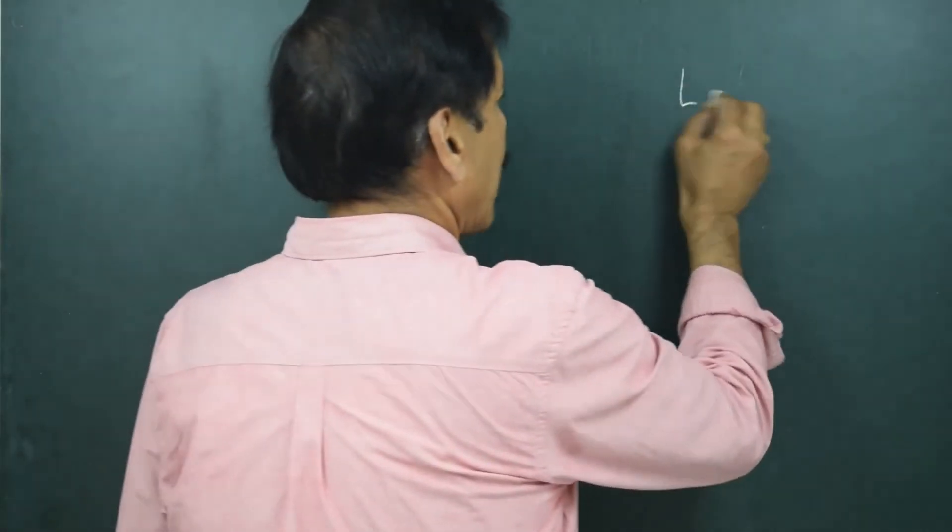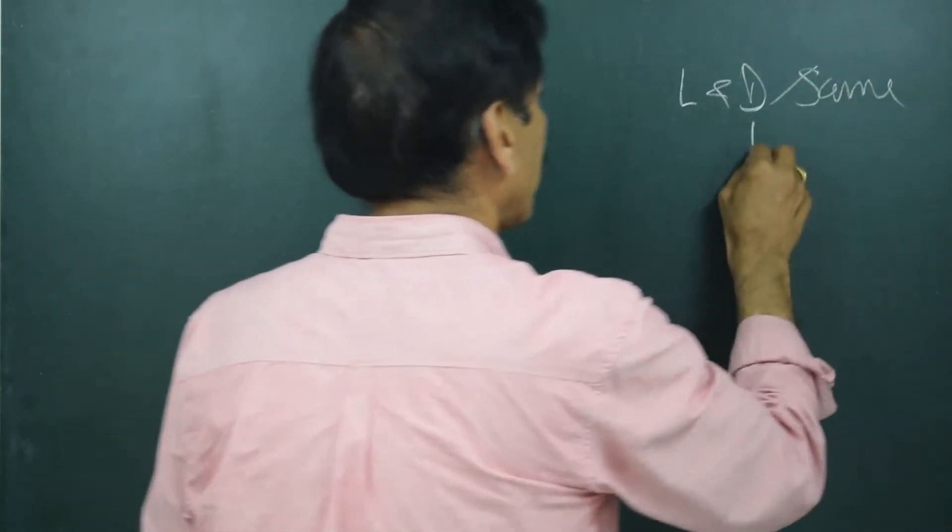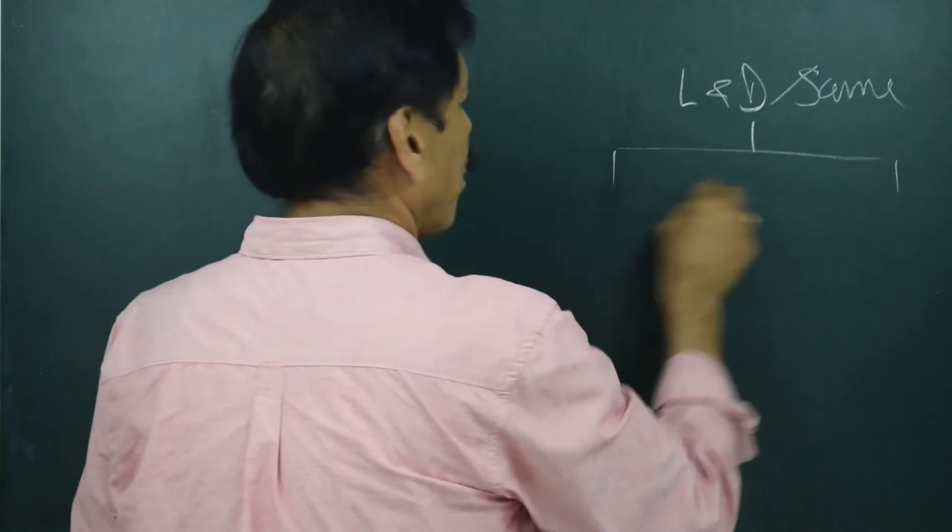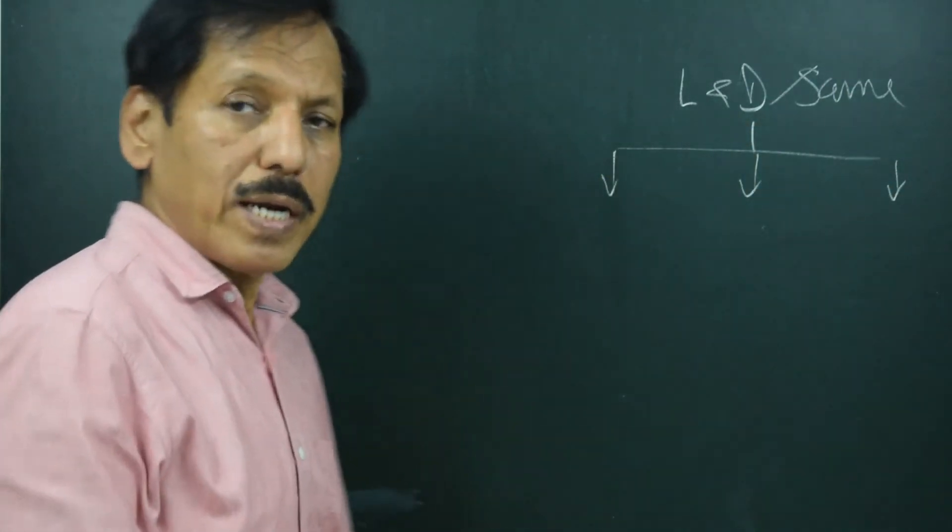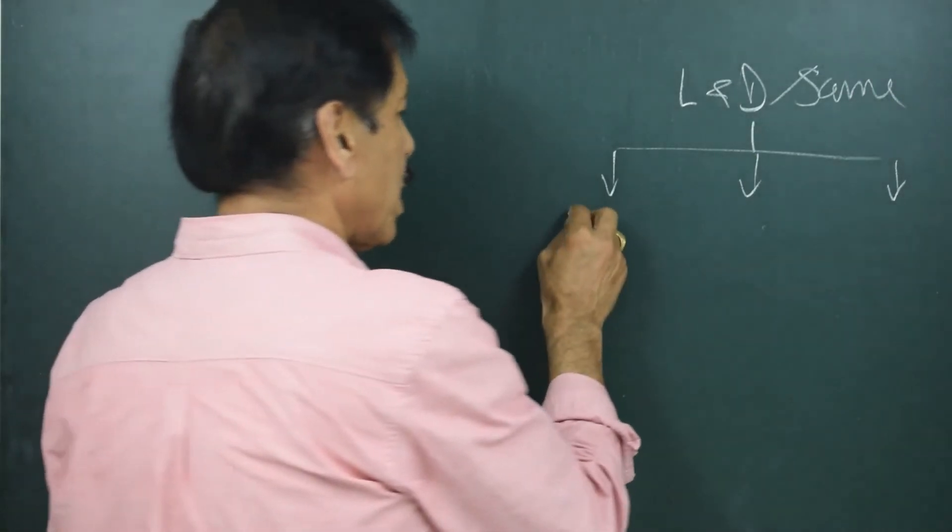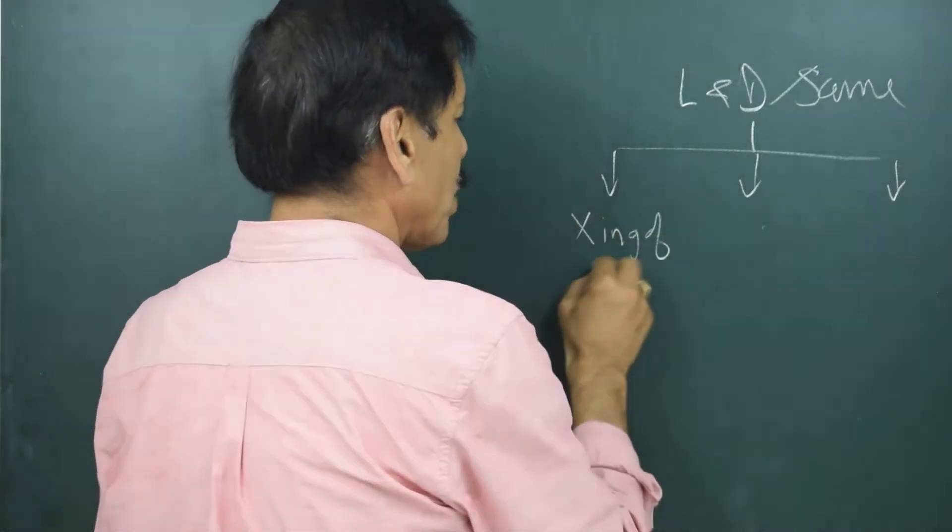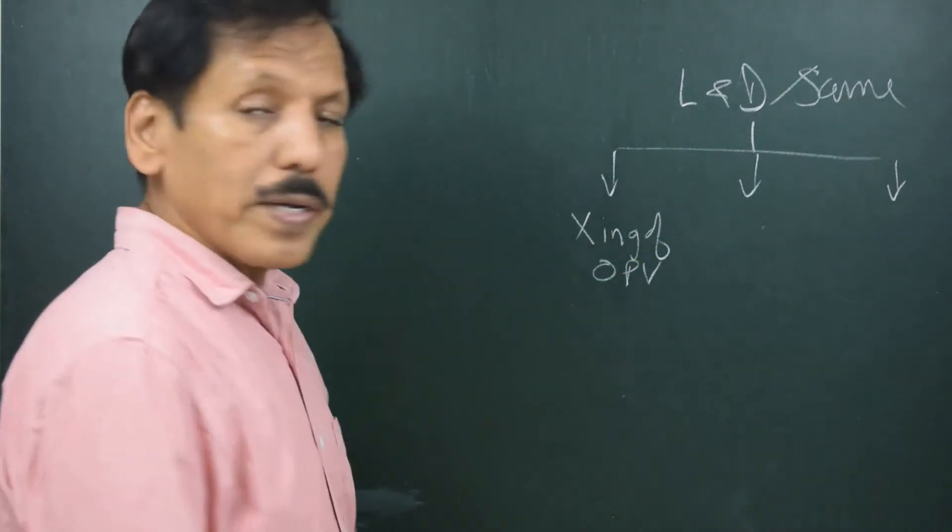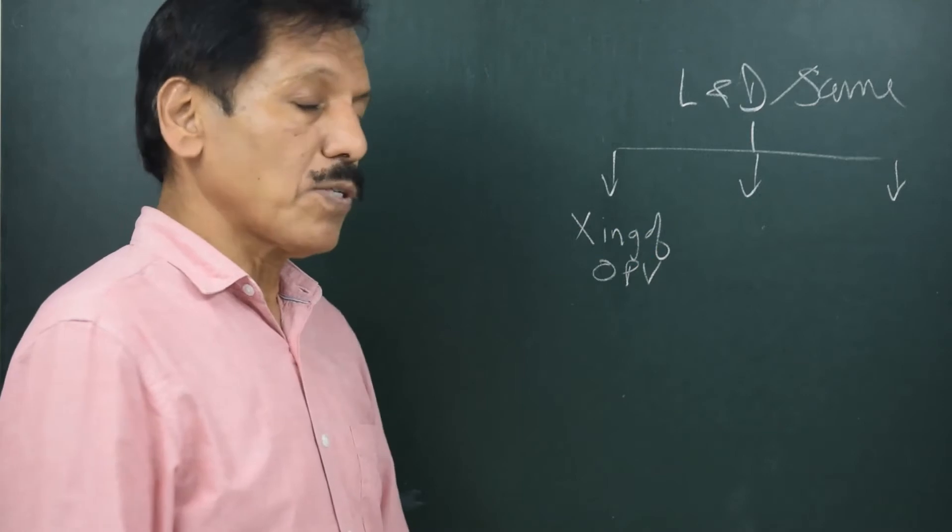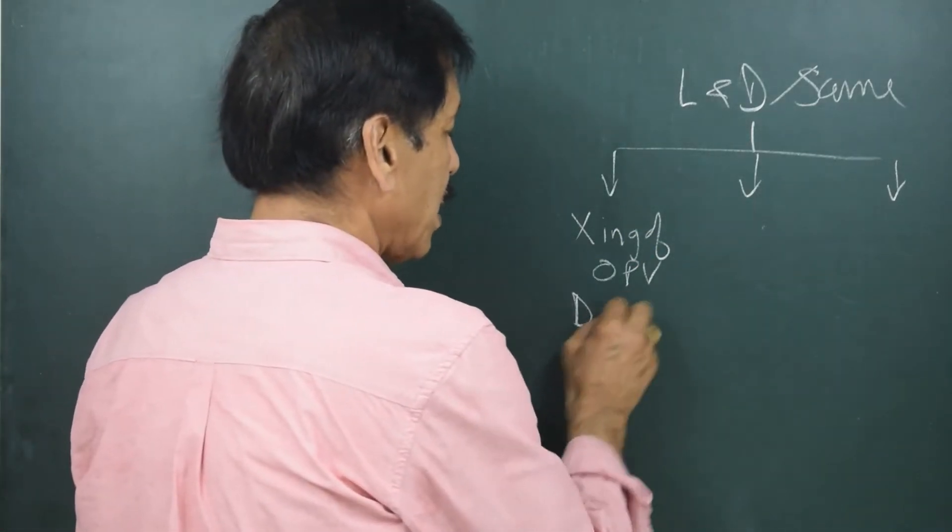Actually with the latitude and declination same name, basically there can be three types of numerical which can be done only when the latitude and declination are same name. One is the numerical involving crossing of observer's prime vertical. Last time we did that numerical, the body would cross the observer's prime vertical if latitude and declination same name, d is less than l.